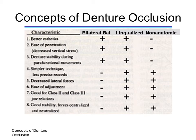The table describes various attributes of each occlusal scheme. Bilateral balancing schemes provide for better aesthetics because they employ an anatomic tooth. The anatomic tooth morphology employed allows easier penetration of food. During parafunctional movements, the denture bases will have good stability.